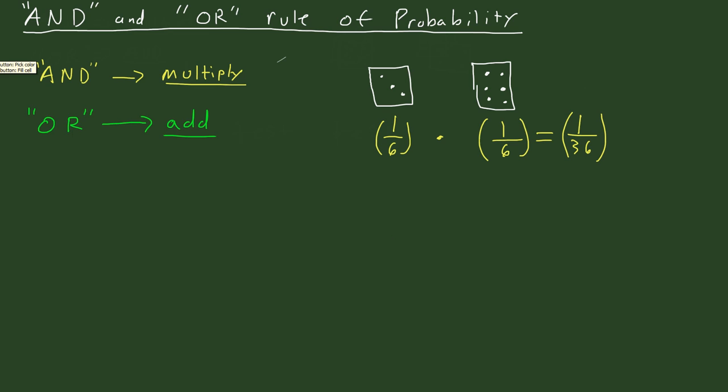So now if we flip that around and we say, well, what's the probability of getting a 3 or a 6 this time? Well, we know again the probability of getting a 3 is going to be 1/6.